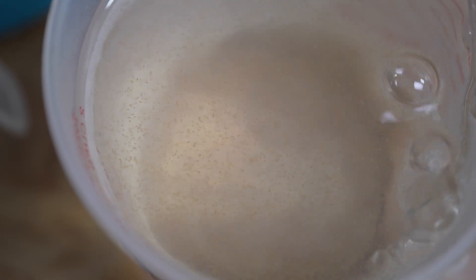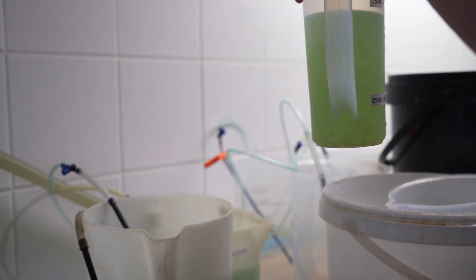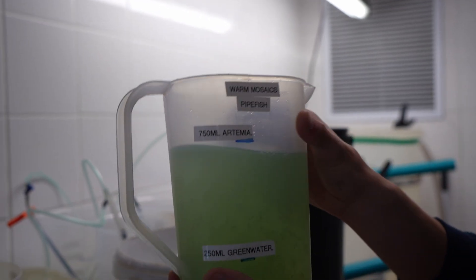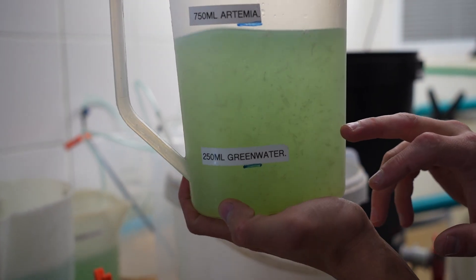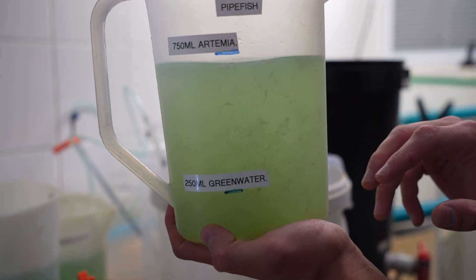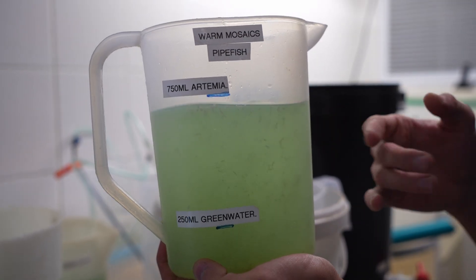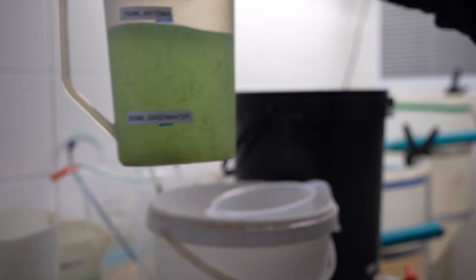So like this, for example, goes to the pipefish. This is Kay's. And what she's done is she's put frozen mysis in as well. So this is a mixture for her pipefish. And then it's a mixture of your green water, artemia, and your frozen mysis as well.